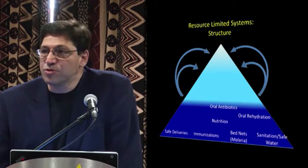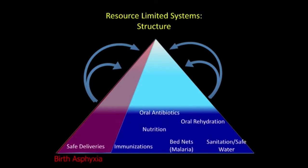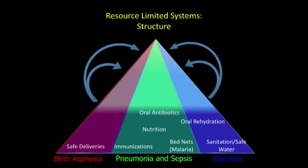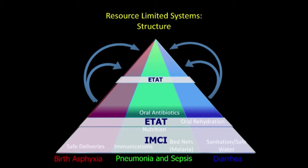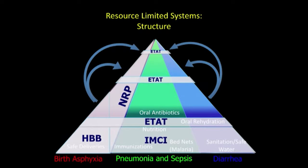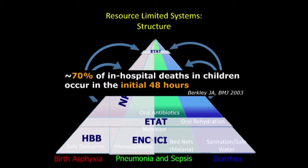In resource-limited systems, we have a number of public health initiatives applied to the masses, but critical care resources are very small. Safe deliveries, pneumonia, sepsis, and diarrhea are major contributors to under-5 mortality in these settings. Programs like Helping Babies Breathe and neonatal resuscitation programs are making impact in newly-born problems where a lot of issues lie. But 25% of children presenting to an ambulatory care center in developing countries are seriously ill, and 70% of in-hospital deaths occur within the first 48 hours — making the time of intervention very critical.